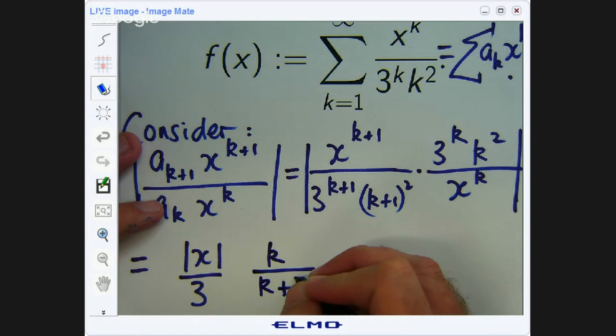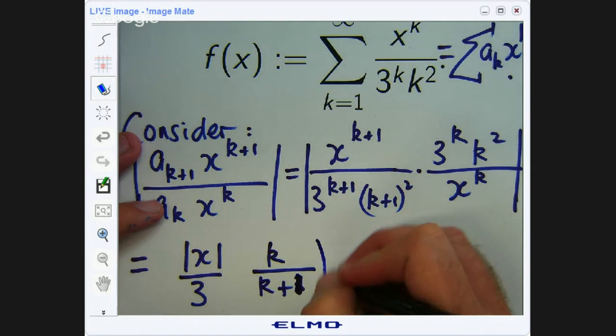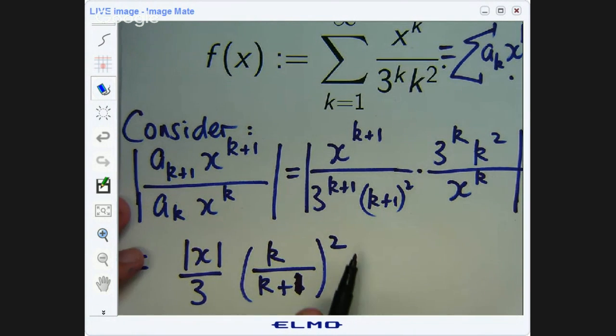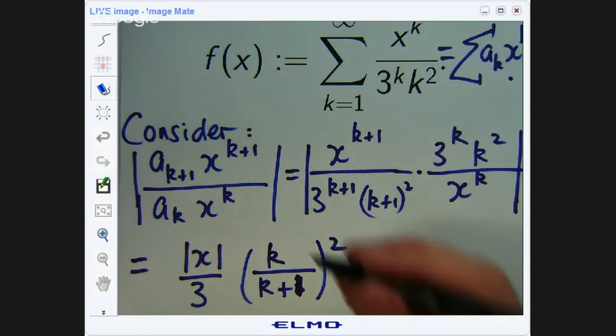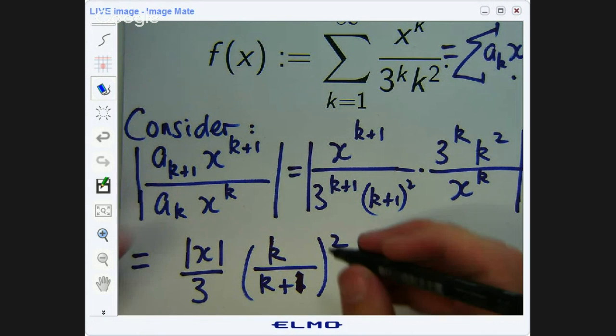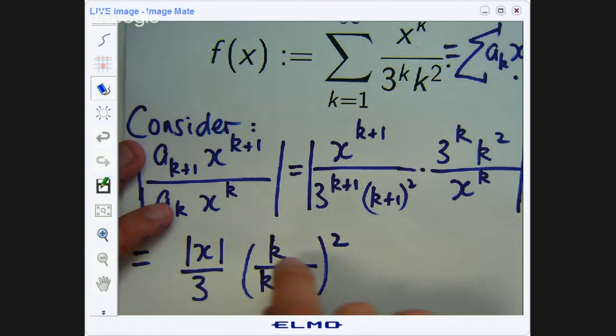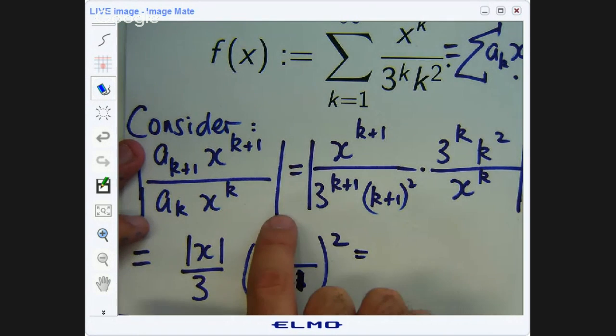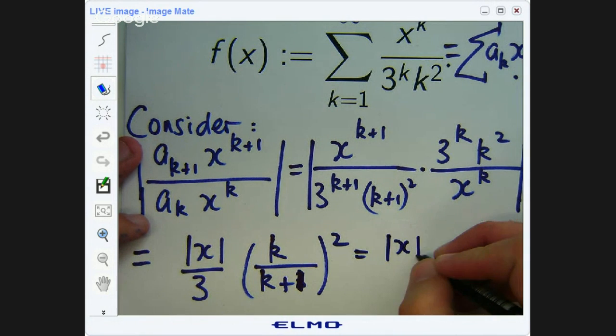I'll be left with a 3 on the bottom. And then I'm left with k squared over k plus 1 squared. So I can get rid of these absolute value signs because everything else is non-negative. So let's put this over 1 squared. Now what we're going to do is look at the limit of this as k goes to infinity. That's the usual standard process. Look at the limit of this as k goes to infinity and then find out what values of x will make this whole thing less than 1. To make the limit easy, I'm going to divide top and bottom by the highest power in the denominator.